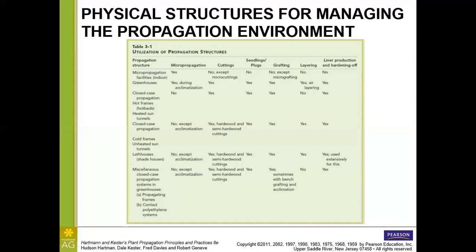We'll see examples of hot beds and closed-case propagation in the next couple of slides. Micro propagation is not used in the other types of structures. We're going to use the closed-case propagation and hot frames for cuttings, and for hardwood and semi-hardwood cuttings we can use closed-case propagation, lath houses — also referred to as shade houses since the laths are less commonly used and now we usually use opaque shade coverings — or other types of systems within greenhouses like propagating frames or contact polyethylene systems.